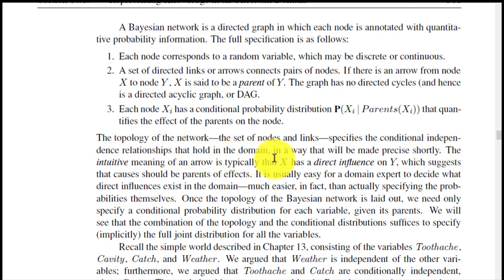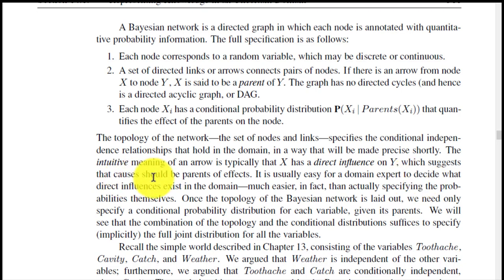The topology of the network — the set of nodes and links — specifies the conditional independence relationships that hold in the domain. The intuitive meaning of an arrow is typically that X has a direct influence on Y, which suggests that causes should be parents of effects. It is usually easy for a domain expert to decide what direct influences exist, much easier than actually specifying the probabilities themselves. Once the topology of the Bayesian network is laid down, we need only specify a conditional probability distribution for each variable given its parents.